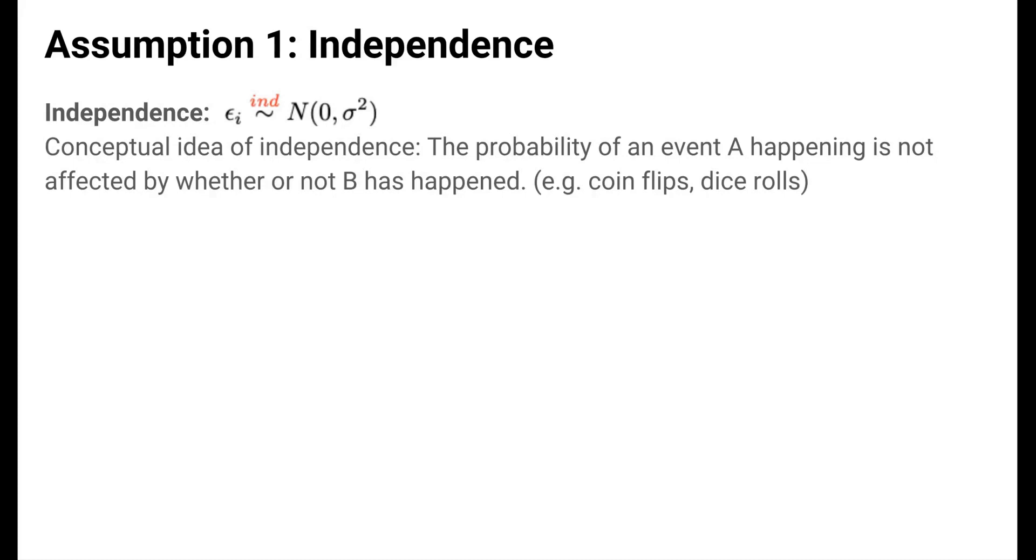The event of me rolling a 3 on my second roll is not affected by the 2 that I rolled on the first. The independence assumption for linear regression says that the amount of error for case i should not depend on the errors for the other cases in the dataset.